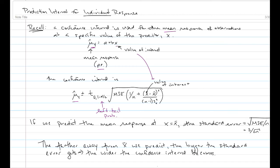This X is the value of interest — we're just saying how far the value we're predicting at is from the mean of our X's in the sample. If we predict the mean response at the average X, the standard error becomes the square root of MSE over n, equivalent to s over the square root of n. The farther from X-bar we predict, the bigger the (X minus X-bar) squared term, the bigger the standard error, and the wider the confidence interval. So the standard error is not constant — it depends on where we predict.